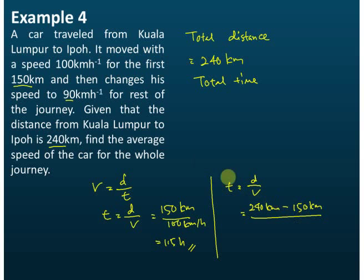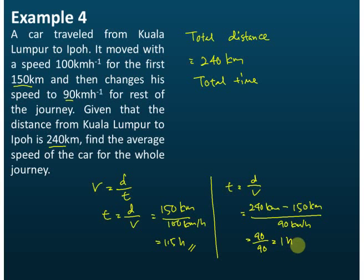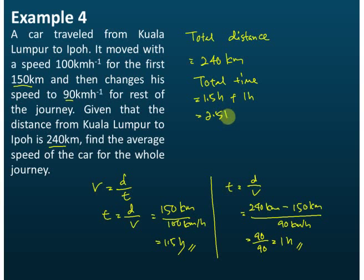For the rest of the journey, the car travels at 90 kilometers per hour. So the time equals 90 divided by 90, which equals 1 hour. The total time taken is 1.5 hours plus 1 hour, which equals 2.5 hours.